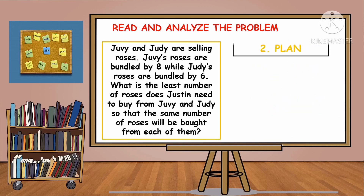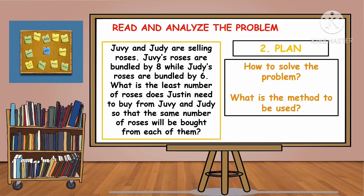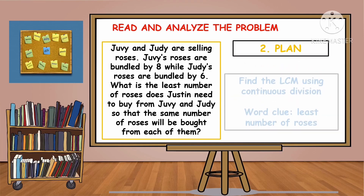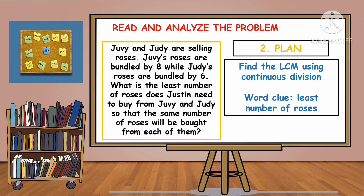The second step: we're going to plan on how to solve the problem and what method we are going to use. We're going to find the LCM using continuous division. Why are we looking for the LCM? Because the problem says, what is the least number of roses that Justin needs to buy from Juvie and Judy? The clue there is 'least number of roses.'